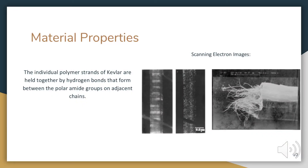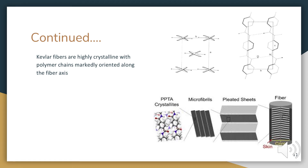Kevlar is held together by hydrogen bonds, as seen in its organic compound structure. These scanning electron microscope images give a really up-close look at Kevlar. It is a highly crystalline polymer with a hexagonal close-packed crystal structure, as shown in the top image. The bottom picture shows how Kevlar is put together and what it would look like at a cellular level.